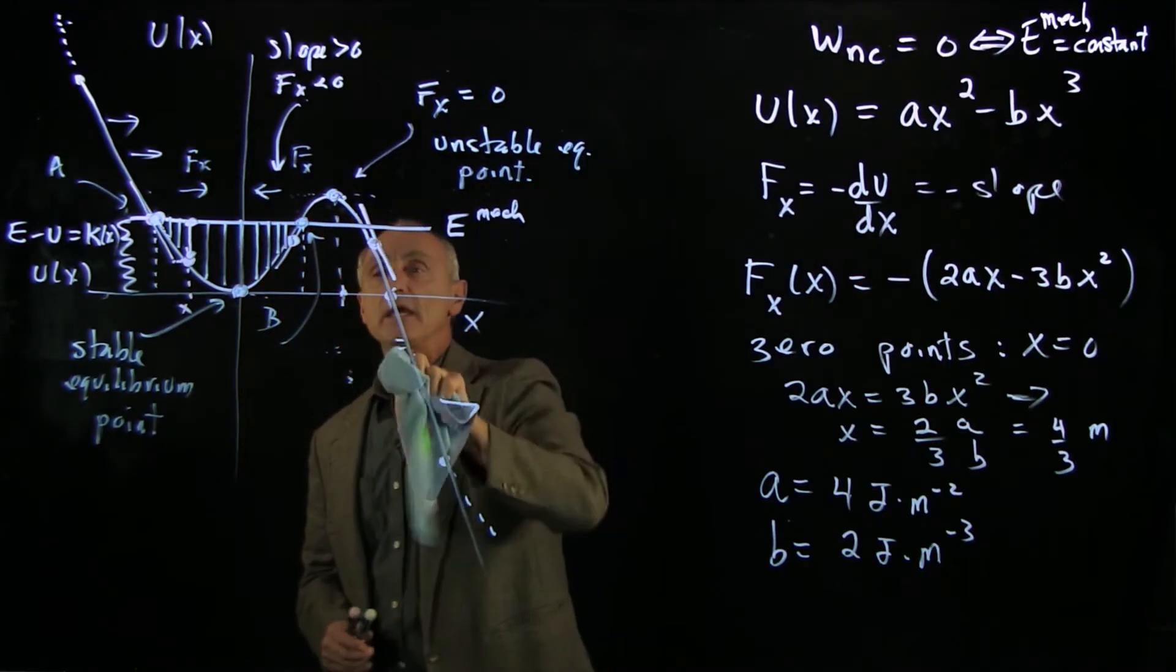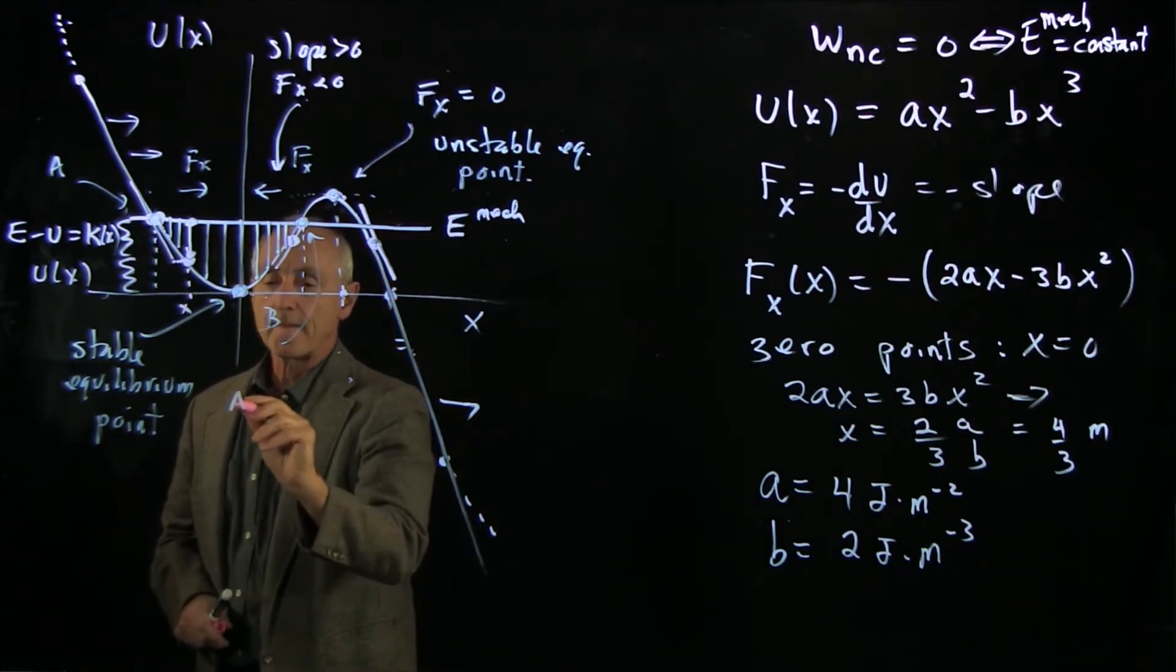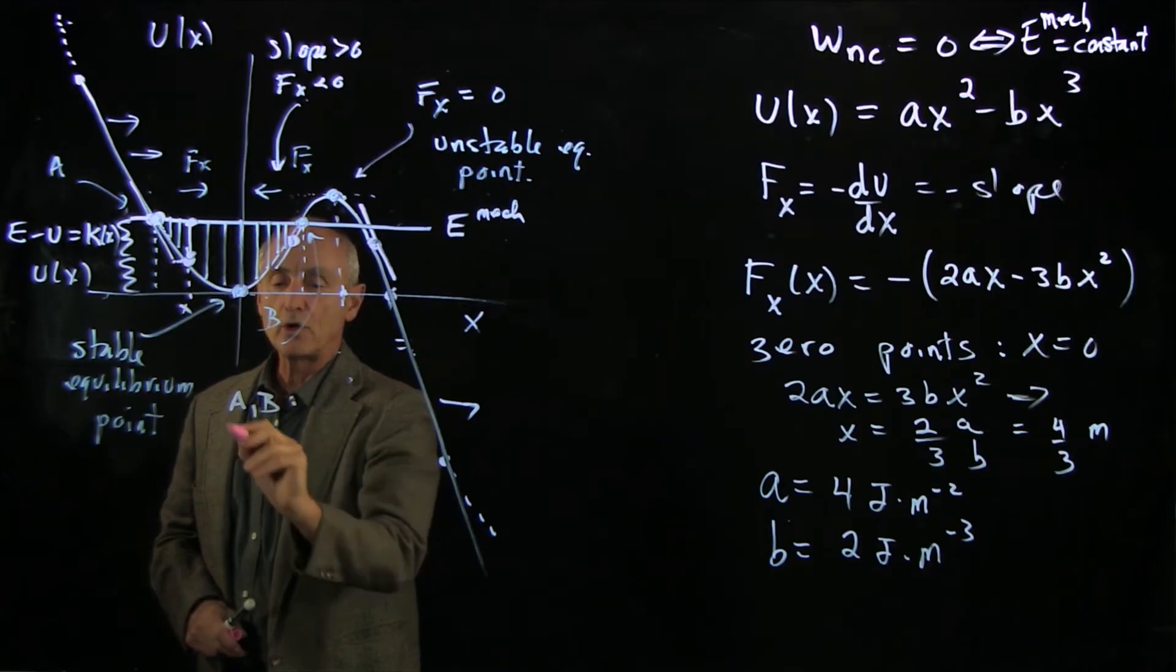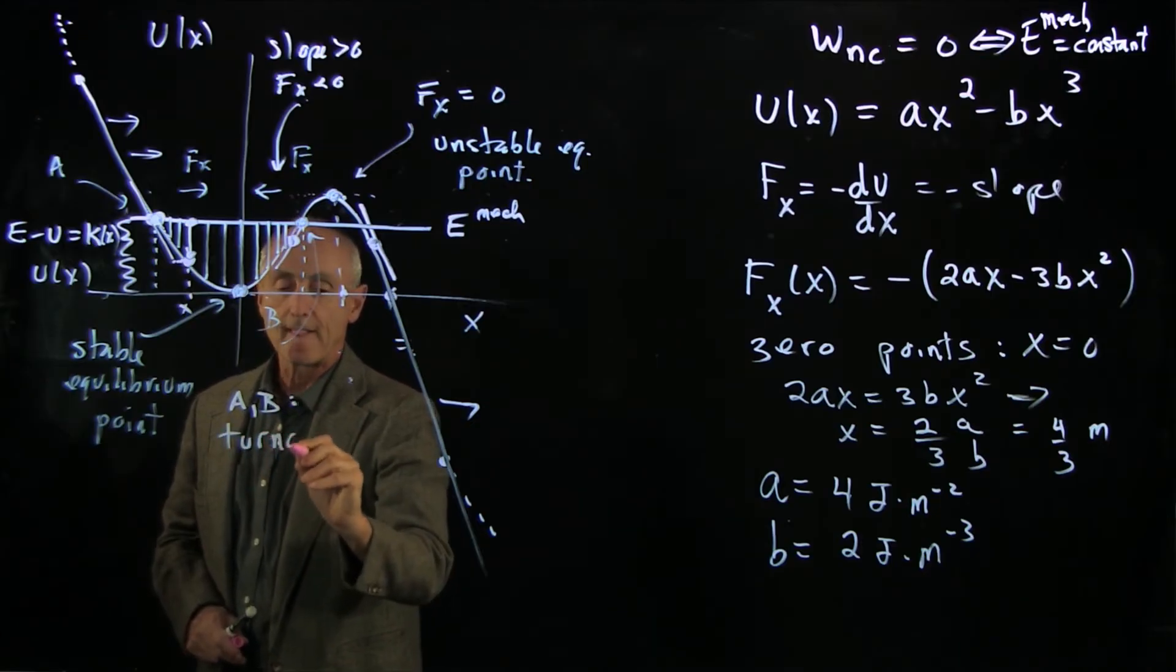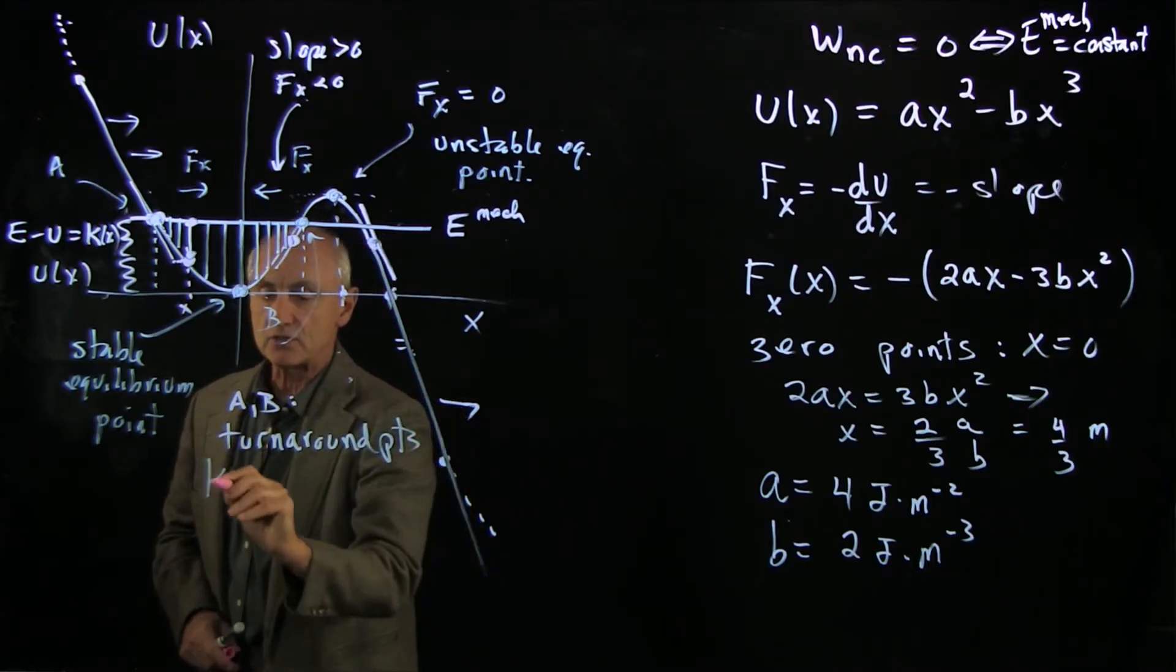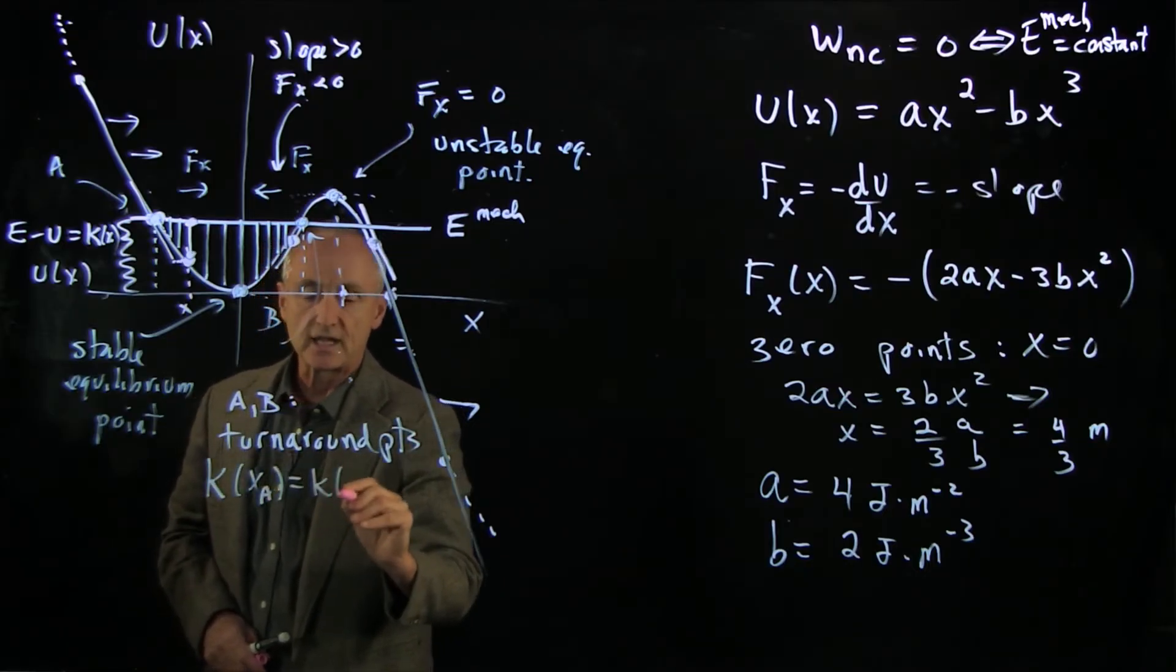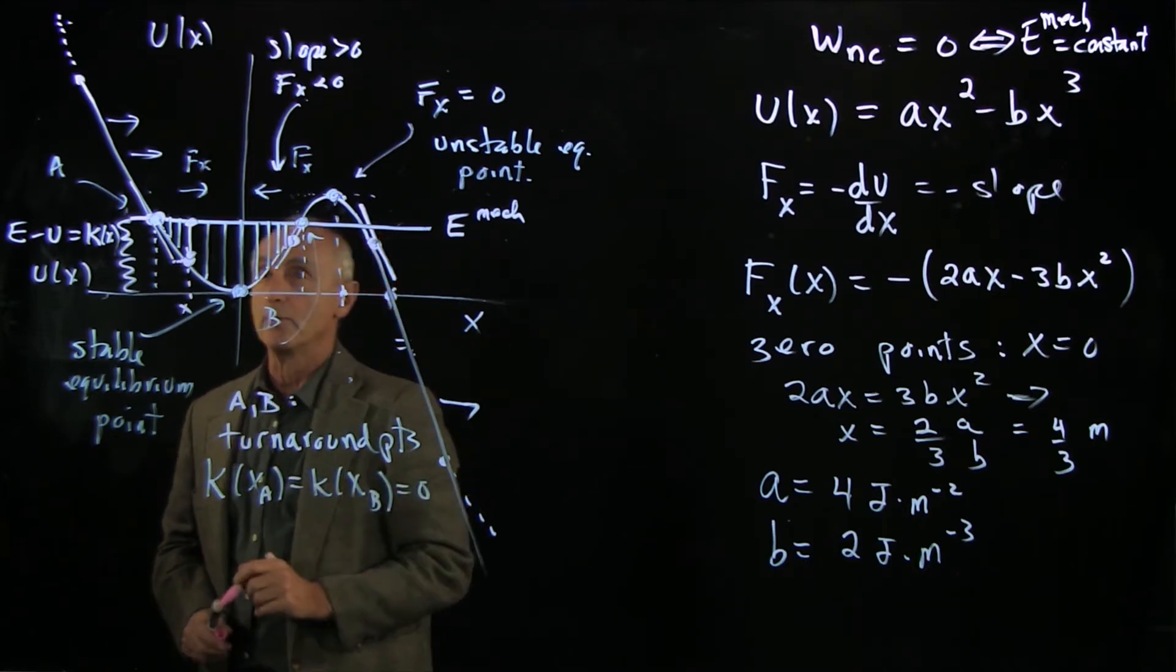And those points A and B are what we call the turnaround points, and they represent the places where the kinetic energy at xA is equal to the kinetic energy at xB, which is zero.